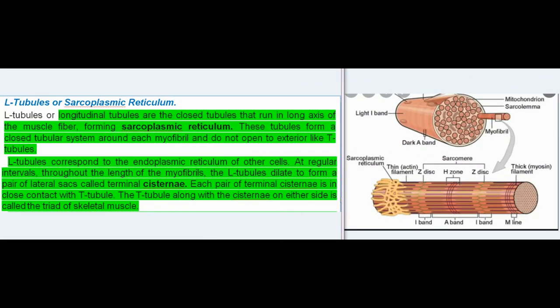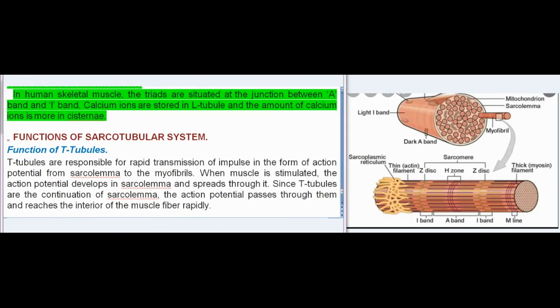L-tubules or Sarcoplasmic Reticulum: L-tubules or longitudinal tubules are the closed tubules that run in long axis of the muscle fiber, forming sarcoplasmic reticulum. These tubules form a closed tubular system around each myofibril and do not open to exterior like T-tubules. L-tubules correspond to the endoplasmic reticulum of other cells. At regular intervals throughout the length of the myofibrils, the L-tubules dilate to form a pair of lateral sacs called terminal cisternae. Each pair of terminal cisternae is in close contact with T-tubule. The T-tubule along with the cisternae on either side is called the triad of skeletal muscle. In human skeletal muscle, the triads are situated at the junction between A band and I-band. Calcium ions are stored in L-tubule and the amount of calcium ions is more in cisternae.